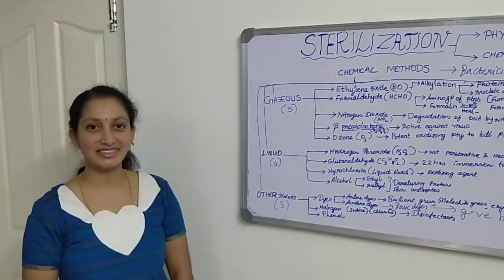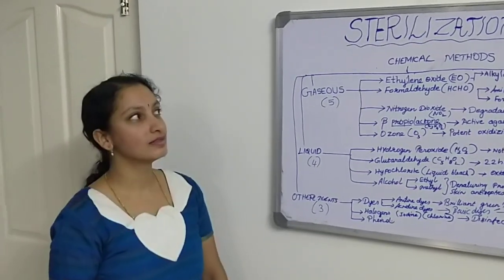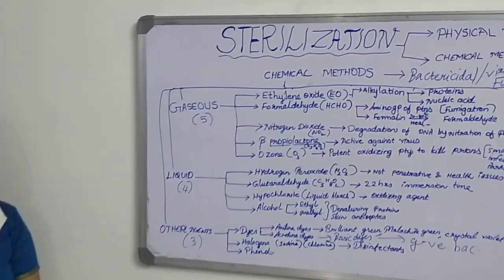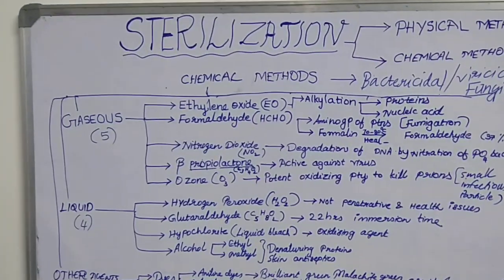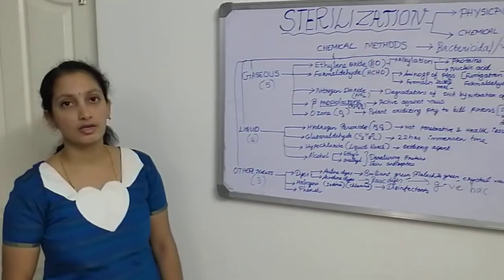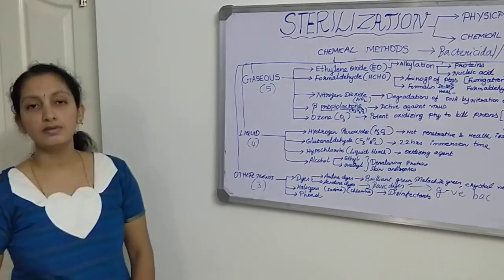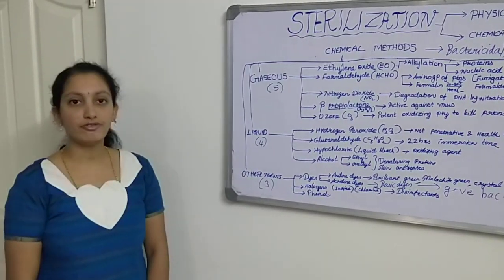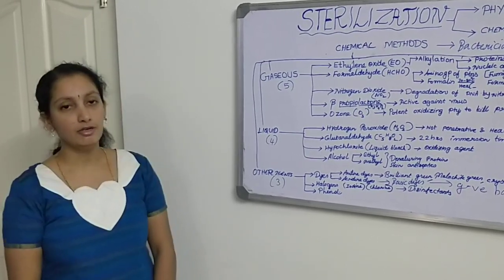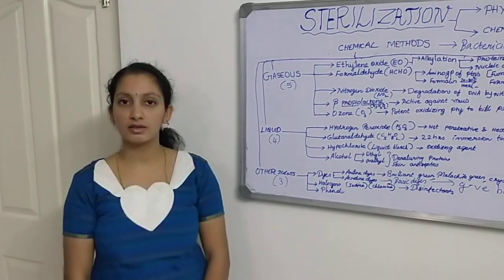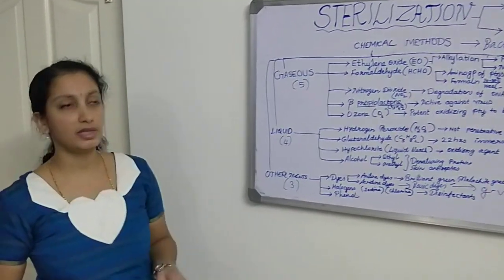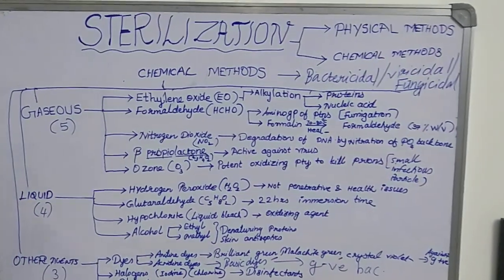Welcome to Science Magic Platform. Today's topic is sterilization — this is the second part of the video about sterilization. Sterilization is the process of killing or removal of microorganisms from any object. Sterilization can be done by using physical methods or chemical methods.